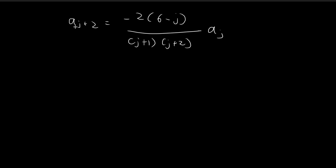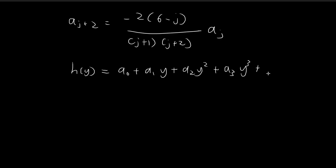We have this recursion formula for the constants A of j, and these A of j's are going to be featured in this polynomial. As with the same logic from the last video, if we find what H of y should be, we will be able to find what the Hermite polynomial should be. In order to find H of y, we need to find these constants, and this recursion formula gives us the relationship between them.